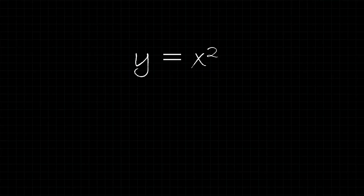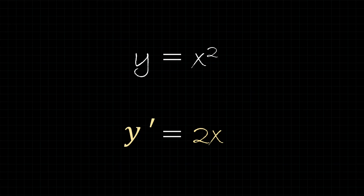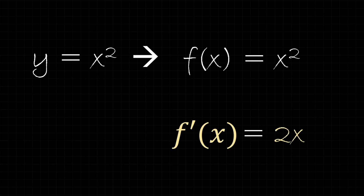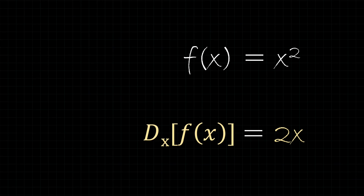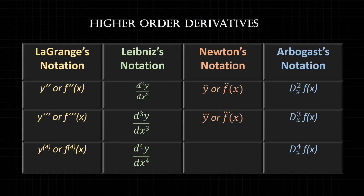Now that we know about the derivative and how we get it through differentiation, the last thing to cover is how we can represent the derivative. For example, given y equals x squared, whose derivative is 2x, there are many different notations we can use. If the function is written as y equals, we have several notations; if it's f of x equals, we have another set. Primarily you'll see the ones on the left — Lagrange or Leibniz notation. We can also differentiate further than once, finding the derivative of a derivative, called the second derivative, or the third derivative, and there are notations for those as well.